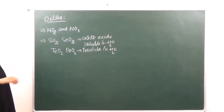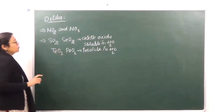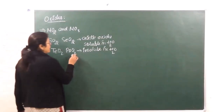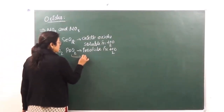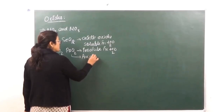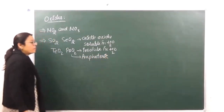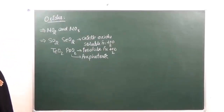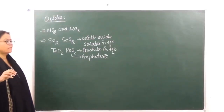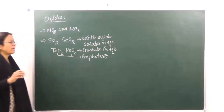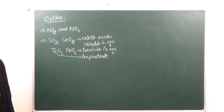Also, both tellurium dioxide and polonium dioxide are amphoteric oxides — we will do this in detail in the next lesson. Amphoteric oxides react with both acids and bases. So both tellurium dioxide and polonium dioxide are going to be amphoteric in nature.